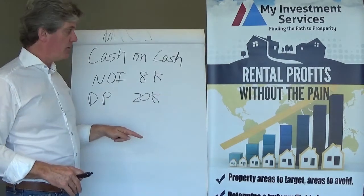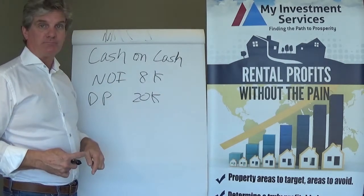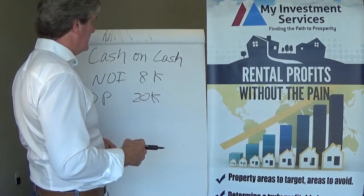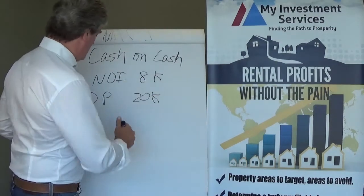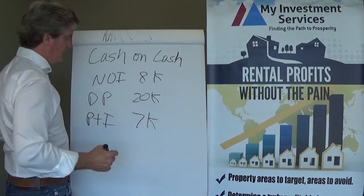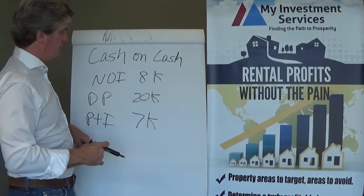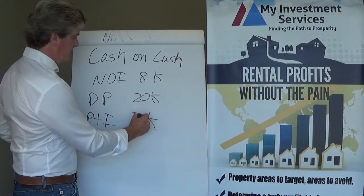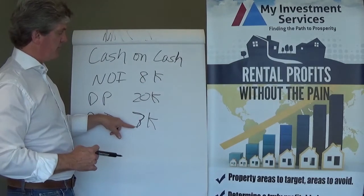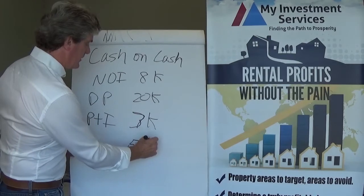To calculate cash on cash return, you do include debt service. Let's say your debt service on that property is $3,000 for the year — principal and interest payments of $3,000. You would subtract the $3,000 from the $8,000, which now gives you a cash return of $5,000.